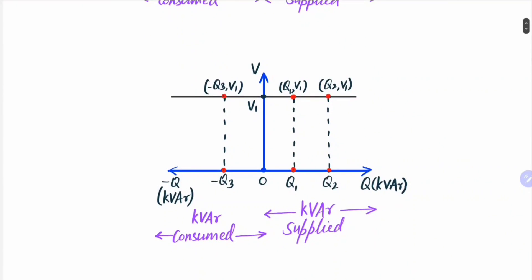Similarly, the vq characteristic of an infinite bus bar is shown in figure, where v is terminal voltage and q is reactive power. Here also we can observe that whether the reactive power supplied by the infinite bus bar is q1, q2, or any other value, the terminal voltage remains fixed as v1, where v1 is terminal voltage at no load. Even if reactive power is being consumed by the infinite bus bar, the terminal voltage remains fixed.